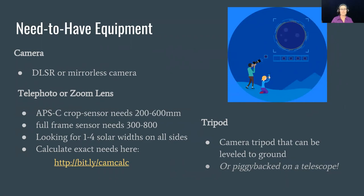You're going to need a steady tripod. When totality comes through, I've heard from many eclipse chasers it can get quite windy, so not just any tripod. Use water bottles or a sandbag to hold down the legs. You can either put your camera directly on the tripod or piggyback it on a telescope — many of you are astrophotographers and are already shooting that way, which will actually help us in the end.